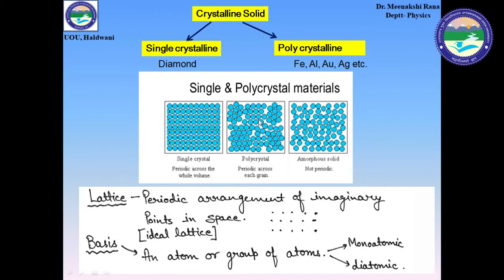Examples of polycrystalline solids are Fe, Aluminium, Gold, Ag, etc. We have already studied about amorphous solids where there is no periodic arrangement of atoms. Now we will discuss about the lattice. Basically, a periodic arrangement of imaginary points in space, as shown in the figure, is known as a lattice.